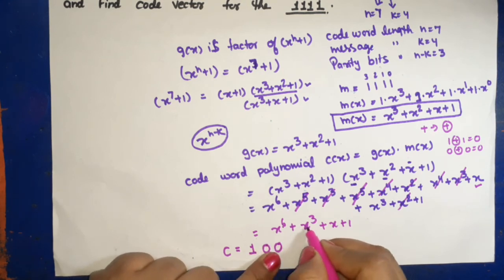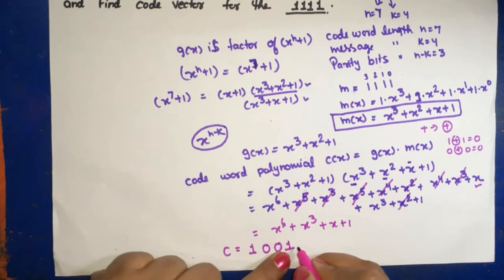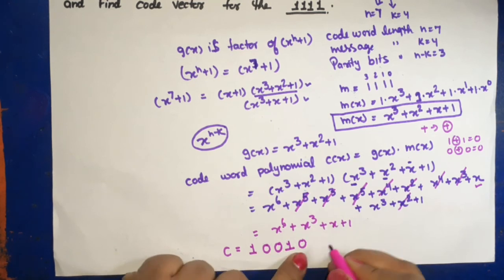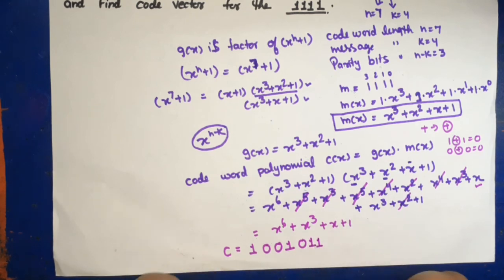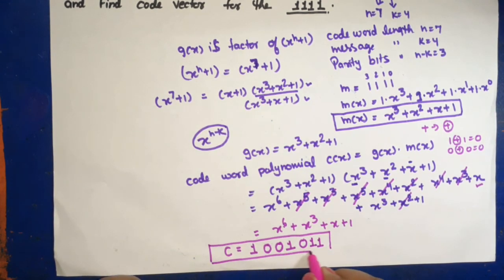x raise to power 3 is available means 1, x raise to power 2 is missing means 0, x raise to power 1 is available means 1, this is x raise to power 0 means 1. So this is the non-systematic code for the given question.